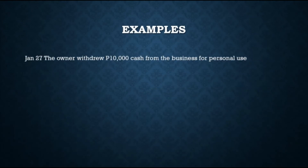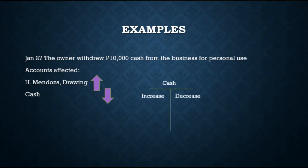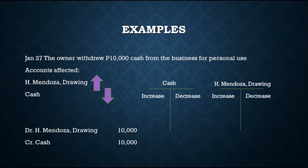For the transaction on January 27, the owner withdrew $10,000 cash from the business for personal use. The accounts affected are H. Mendoza Drawing and cash. Drawings will increase since H. Mendoza made a withdrawal, and cash will decrease since cash was taken from the business. Since cash decreased, it goes on the credit side. Since H. Mendoza Drawing increased, it goes on the debit side. The journal entry is: debit H. Mendoza Drawing $10,000 and credit Cash $10,000.